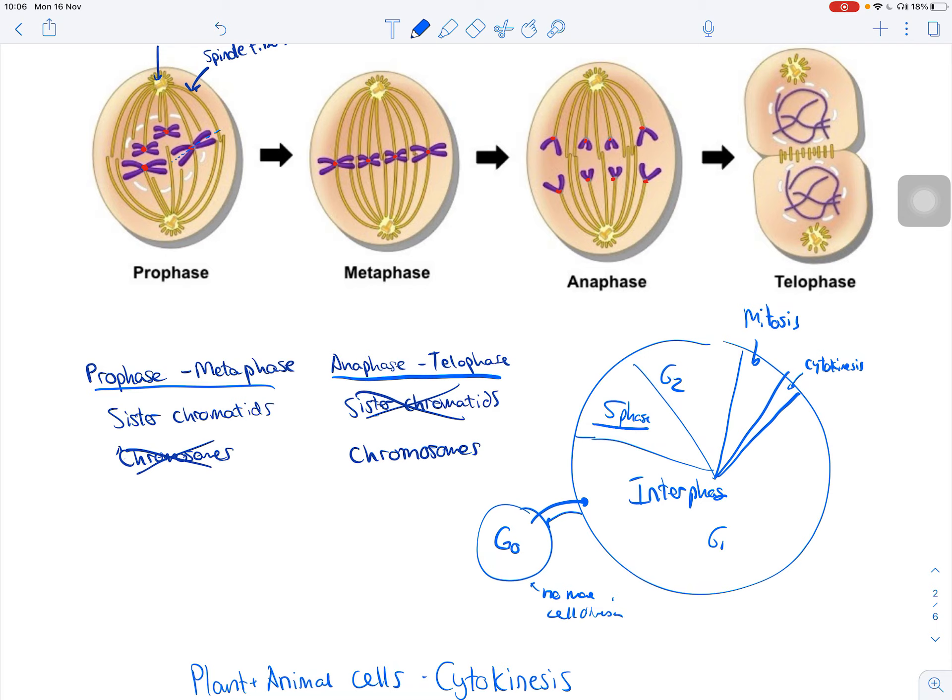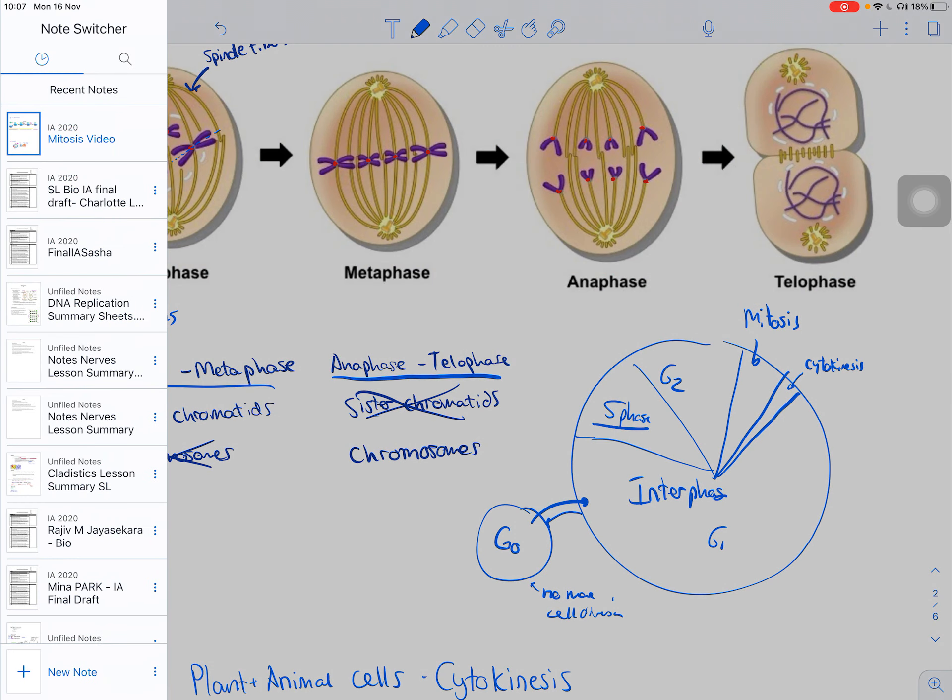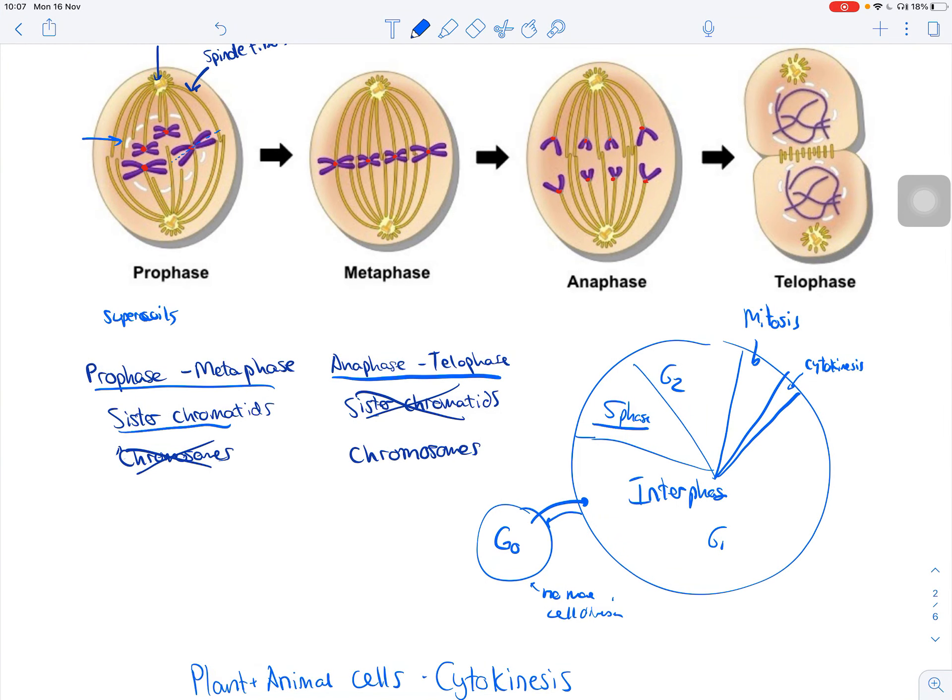And one of the characteristics of prophase was when the DNA super coils around those histones and so forth and becomes visible during that phase. So that's what prophase is really about, is that becomes visible, the nuclear wall starts to break down. But we call these sister chromatids.